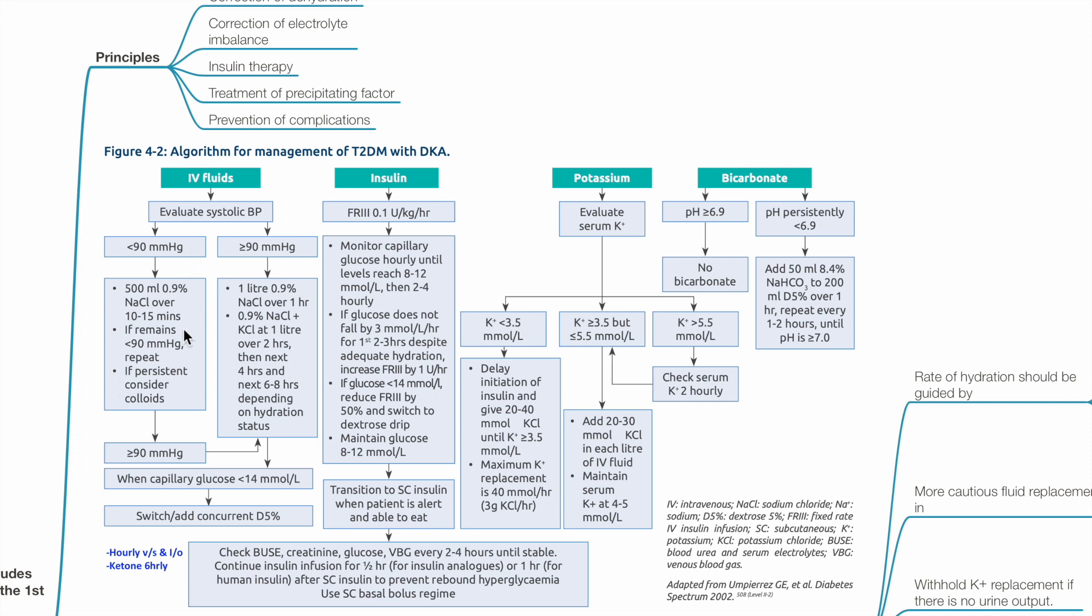If systolic blood pressure improves to more than 90 mmHg, provide 1 liter of normal saline over 1 hour, followed by normal saline with potassium supplementation depending on potassium levels of 1 liter over 2 hours, then 1 liter over 4 hours, then 1 liter over 6-8 hours depending on hydration status. When capillary blood glucose is less than 14 mmol per liter, switch or add concurrent dextrose 5%.